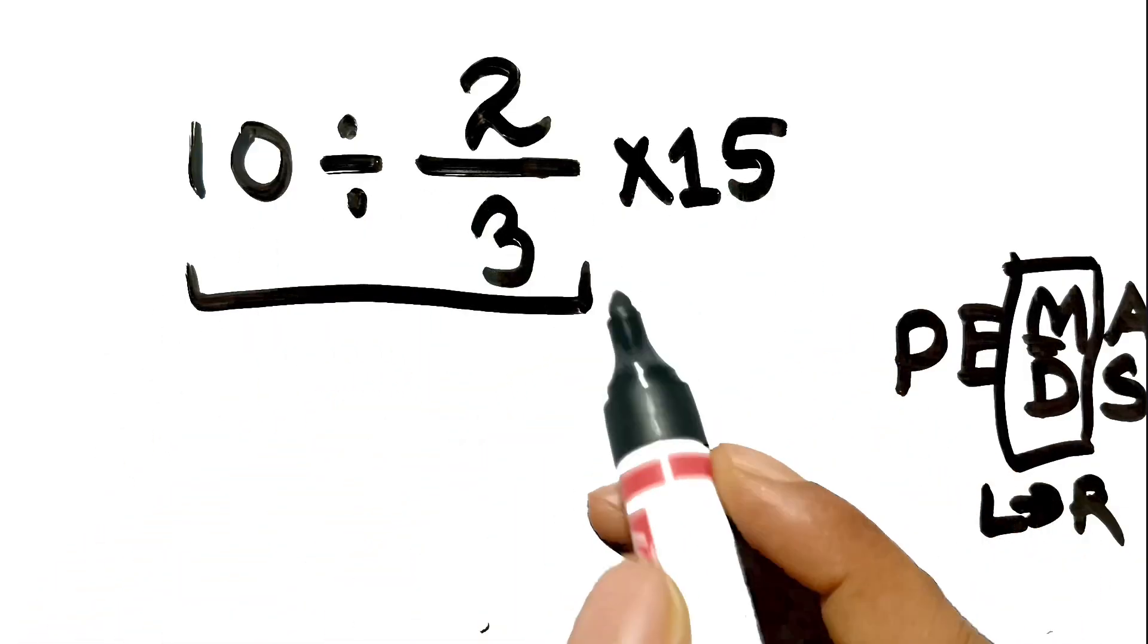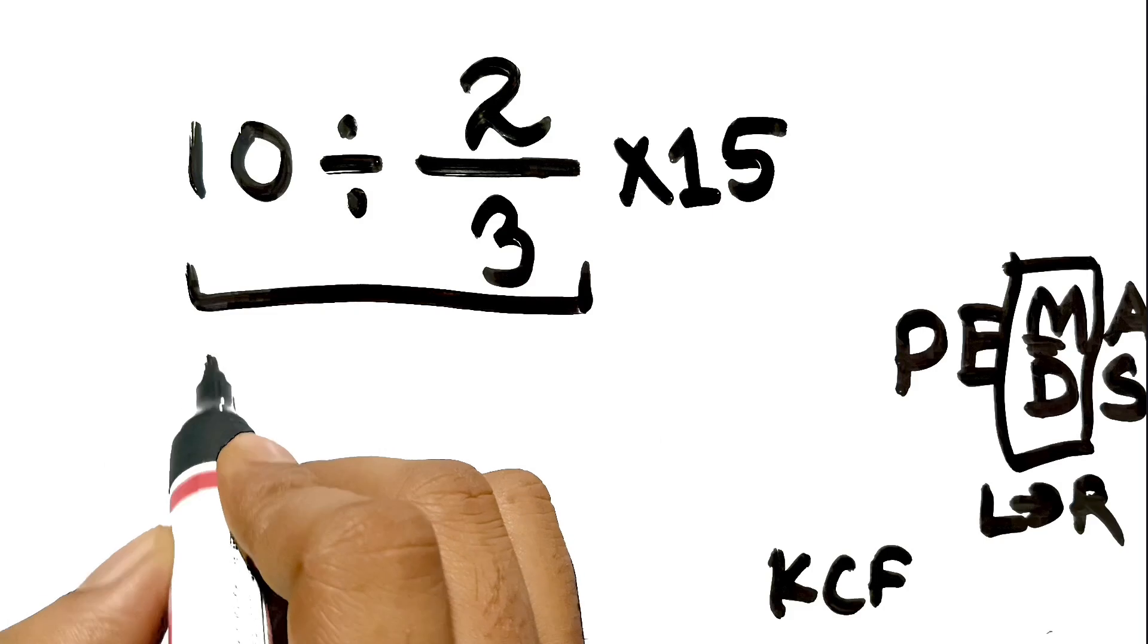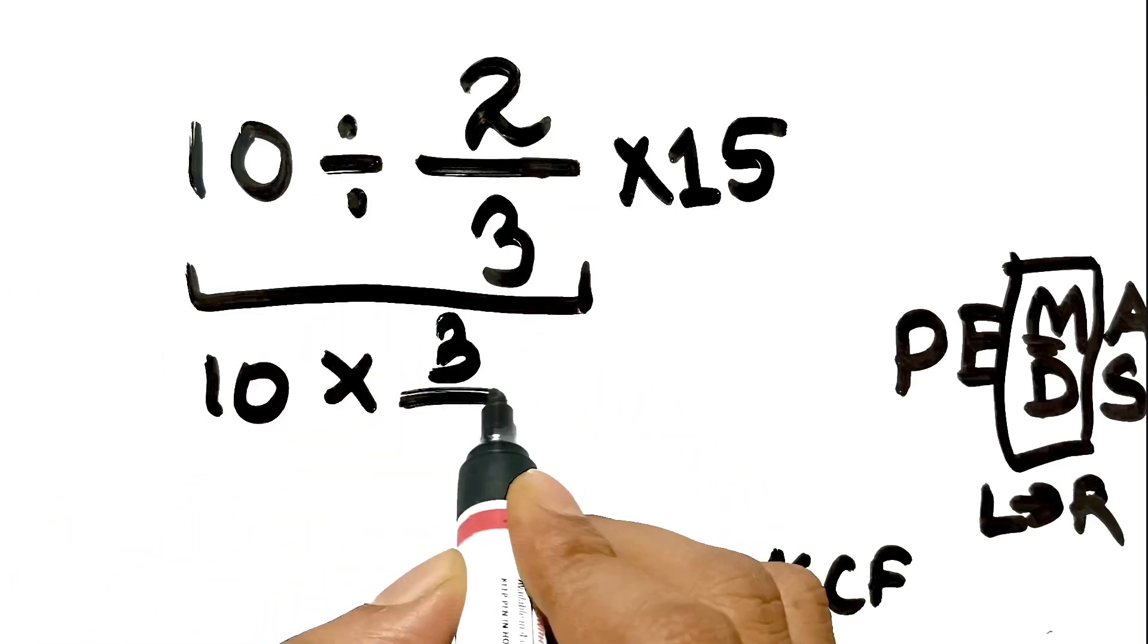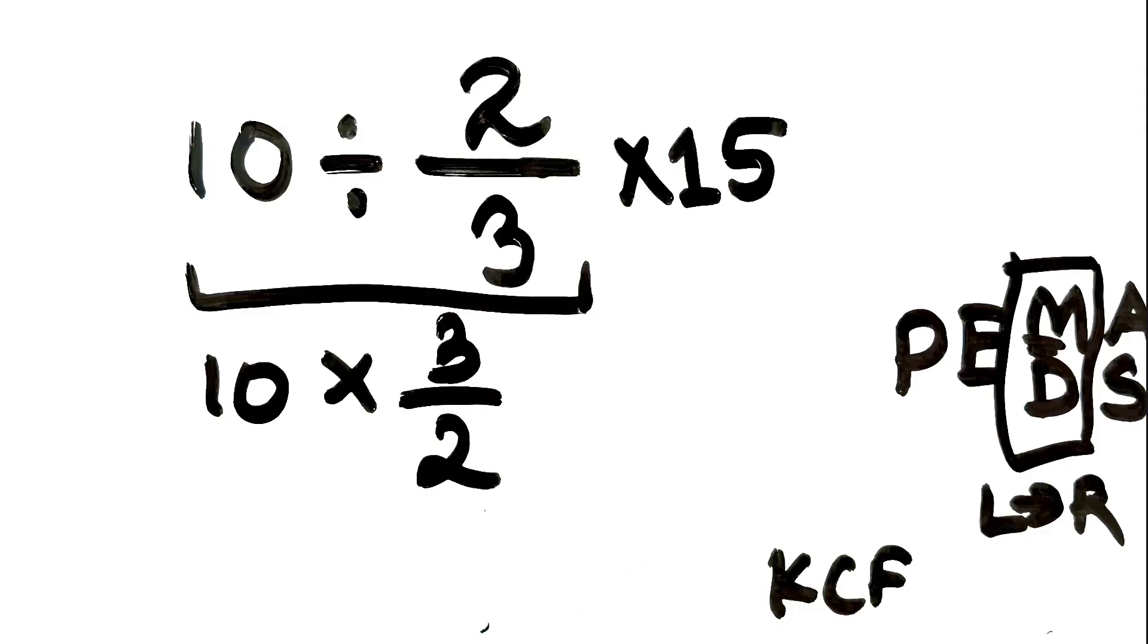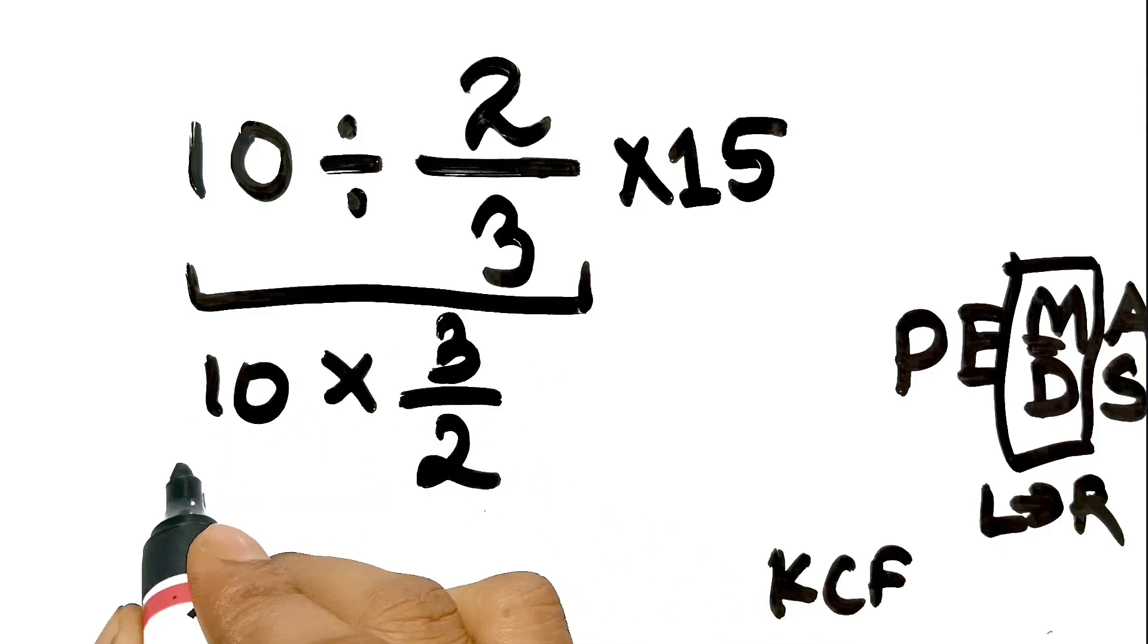To divide by a fraction, we use the rule: keep, change, flip. We keep the 10, change division to multiplication, and flip 2 over 3 to become 3 over 2. So, 10 times 3 is 30, and 30 divided by 2 is 15.